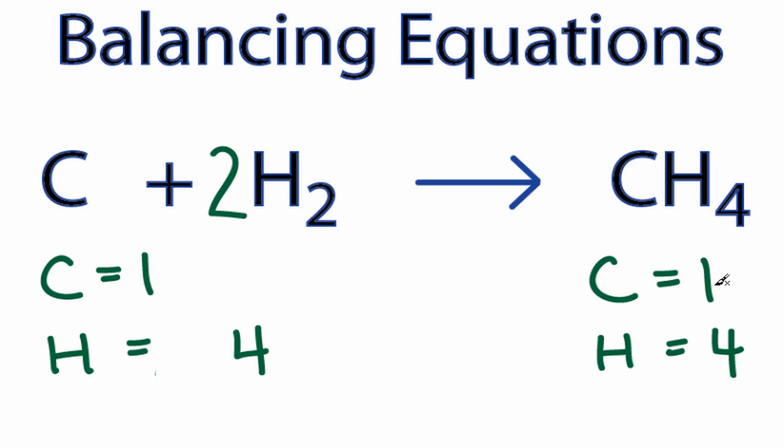Over here I still have one carbon and four hydrogens. So all of the atoms match up on both sides, on the reactants and the products. That makes this a balanced equation: C plus 2H2 yields CH4.